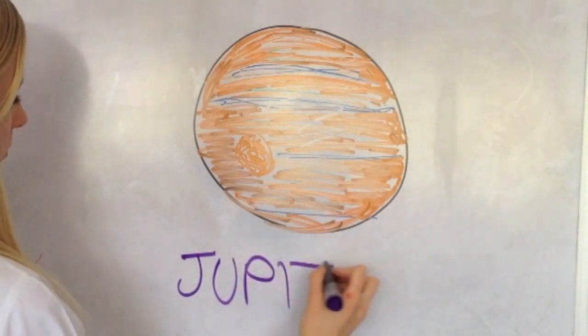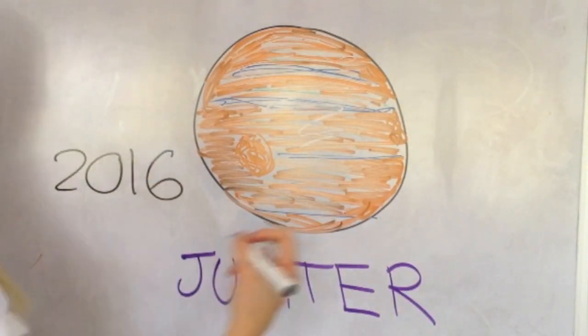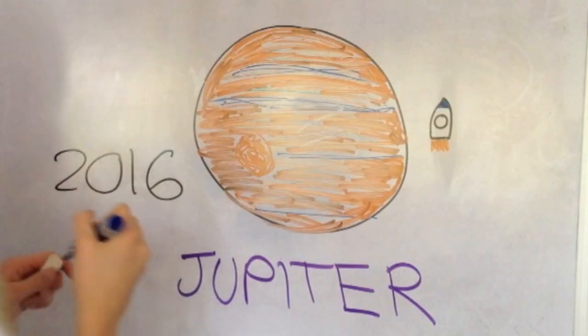Meanwhile, Earth would have been moved by a fraction. Juno will arrive at Jupiter in 2016. It will study the interior of the planet.